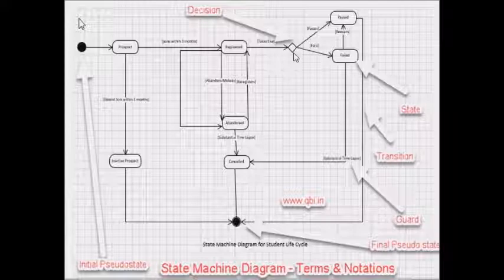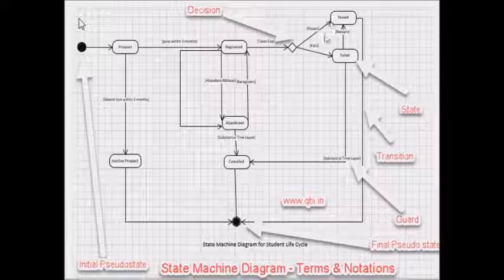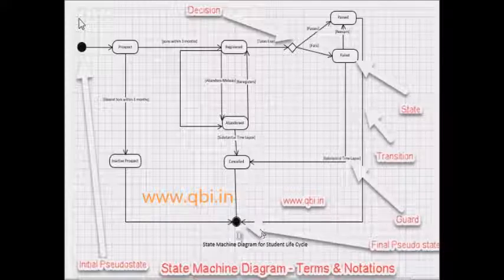Then another notation of diamond is that of decision. So say for example, a student to take the exam can either pass or fail. So that is the decision.